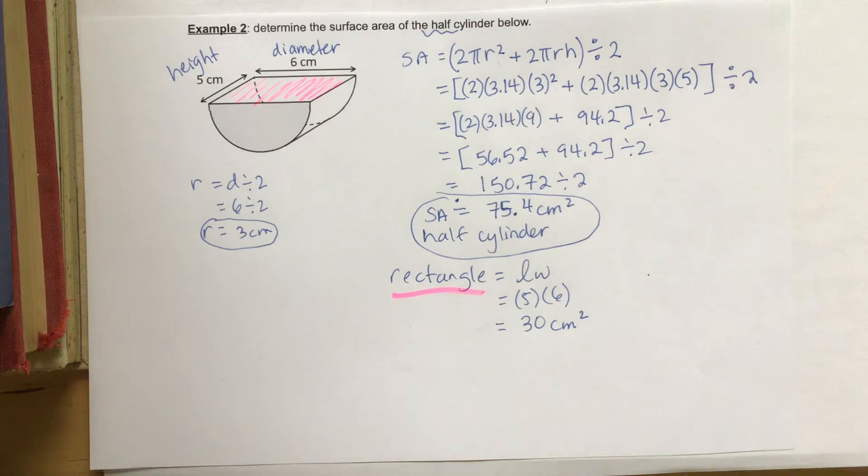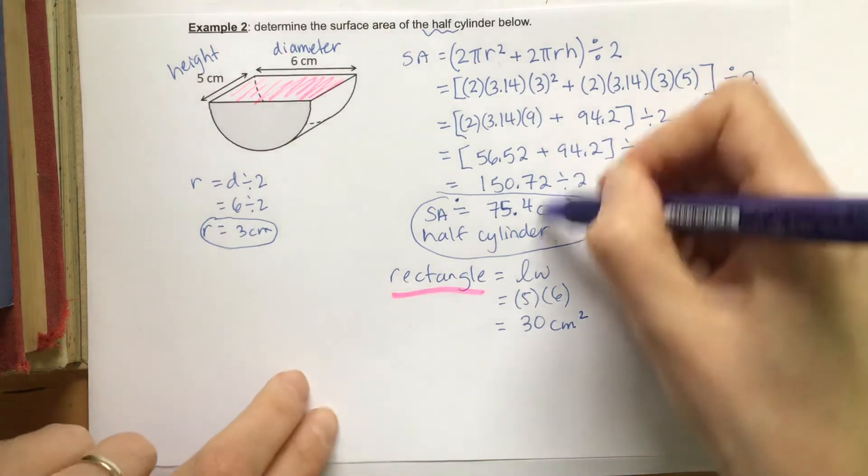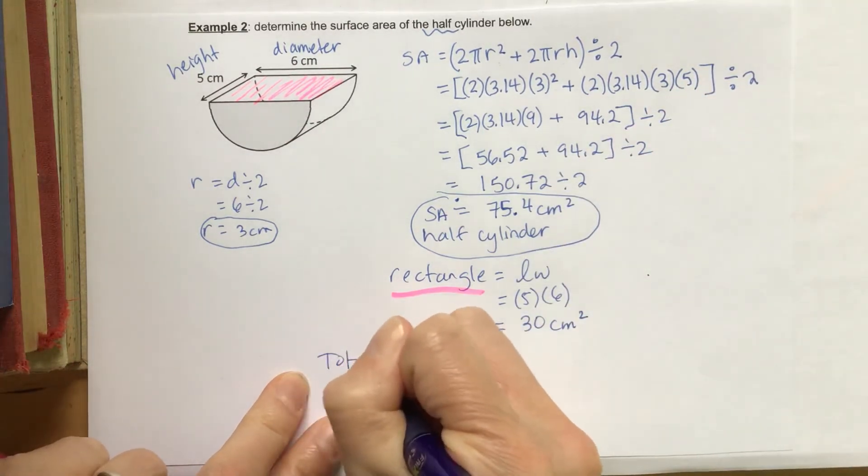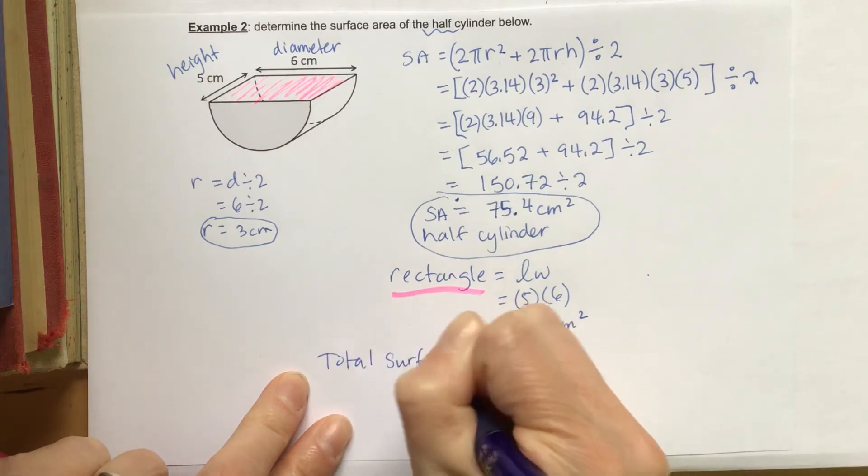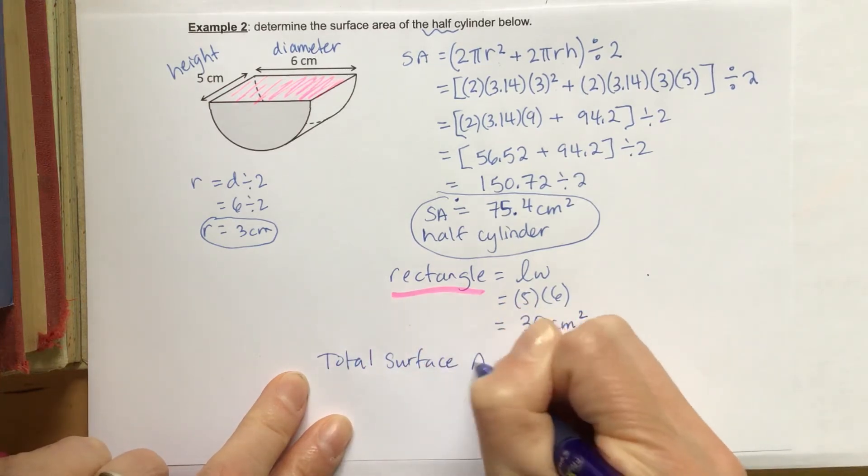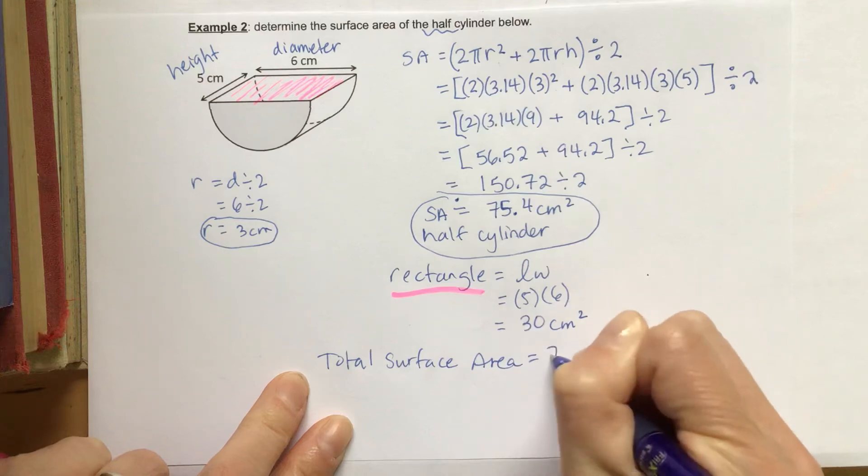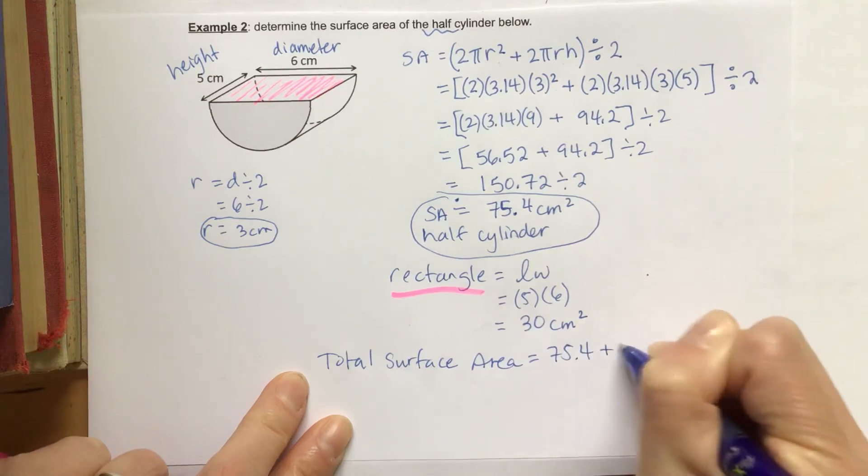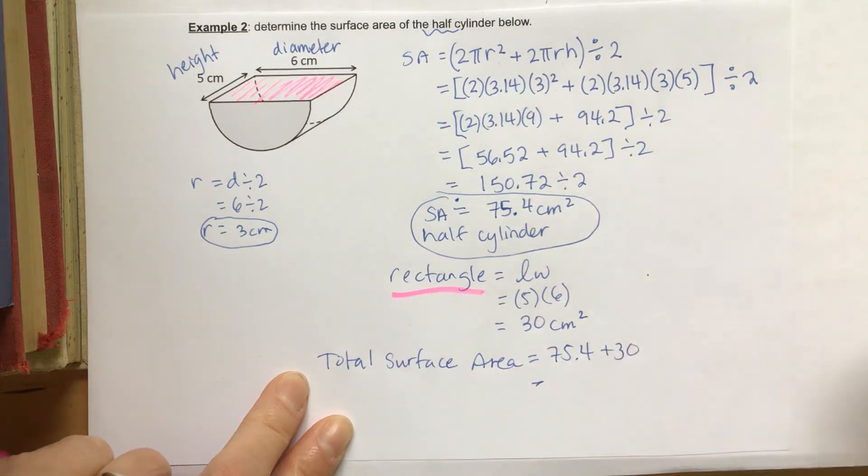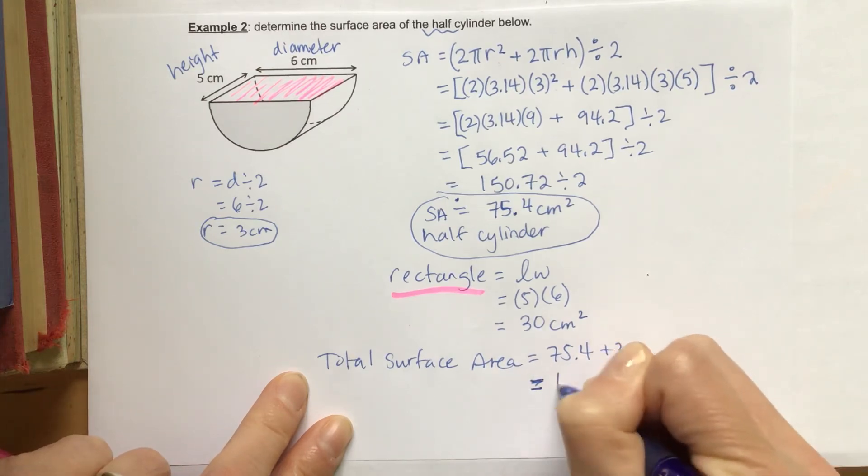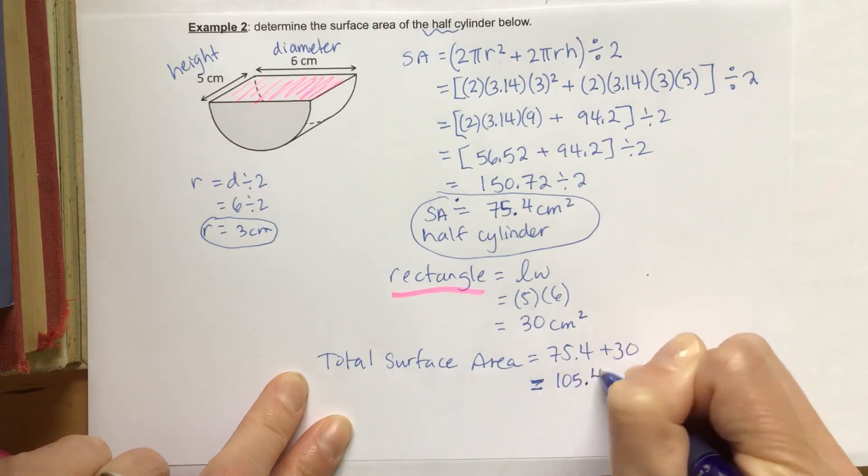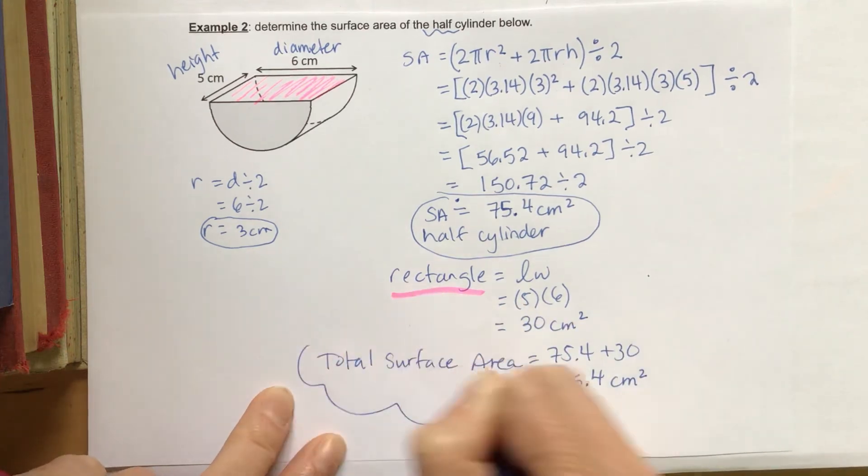And lastly, we're going to add these two things together here to get our total surface area. So 75.4 plus 30, and that's going to give us 105.4 centimeters squared as our final answer.